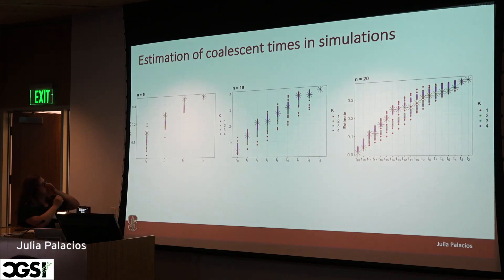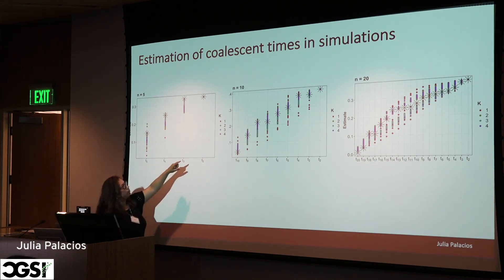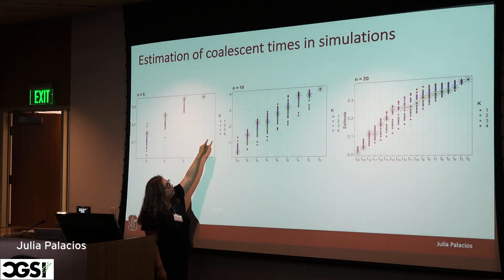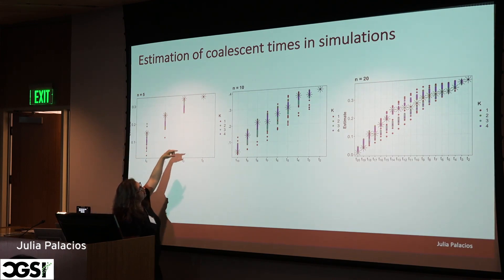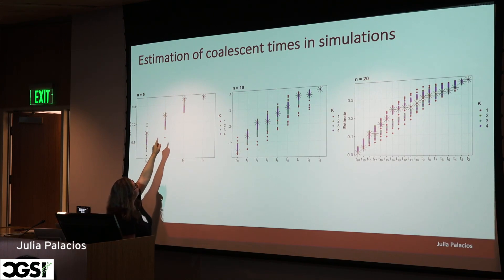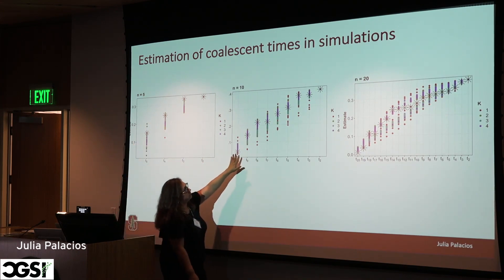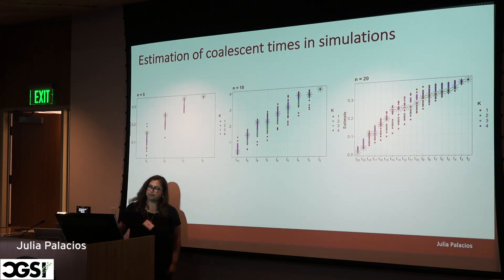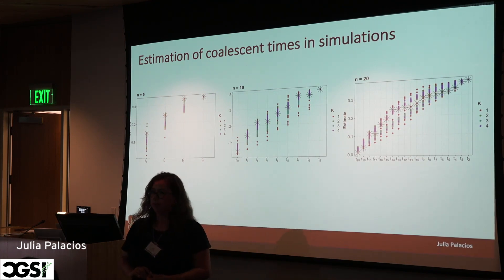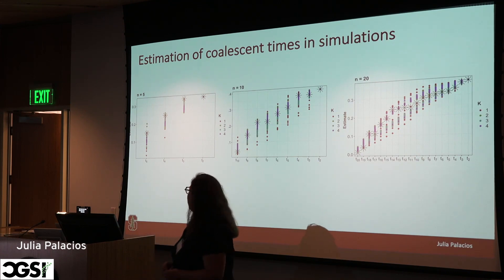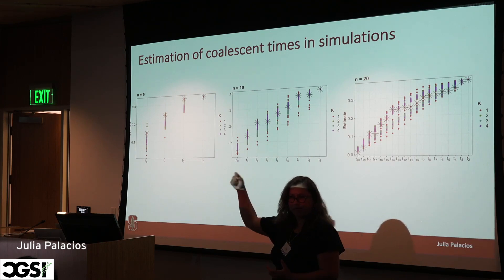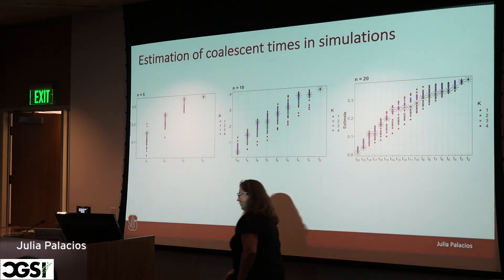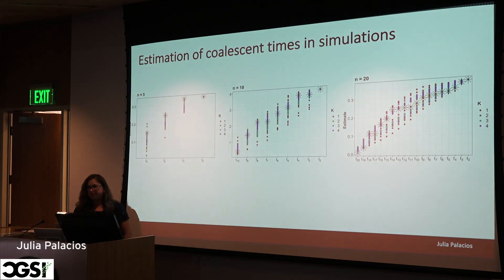We also estimate branch lengths — coalescent times — and the colors indicate the number of integration barcodes. With only one barcode, estimation is all over the place. The truth is marked as a star. With more integration barcodes, inference becomes more centered around the truth. This improves with more samples (5, 10, 20), though the gain from samples is smaller. The simulation uses a coalescent model for the tree and our Q-matrix for the mutations.